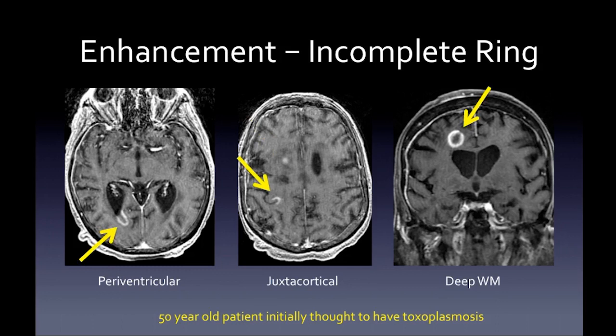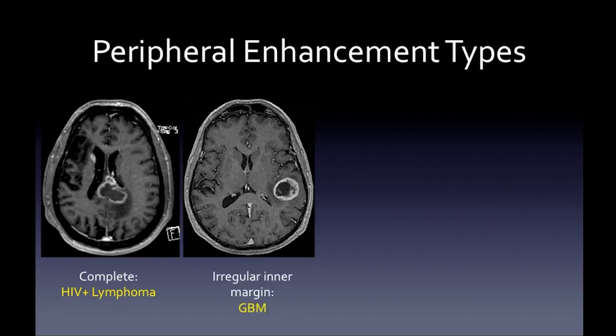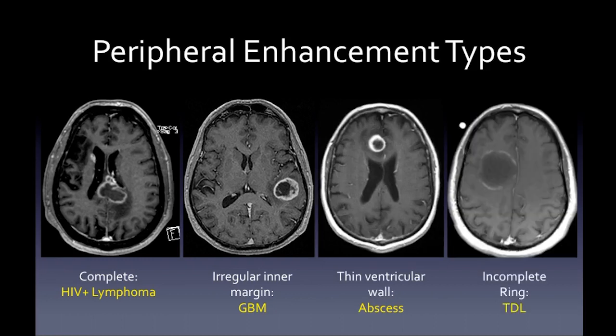For peripheral enhancement types: complete ring enhancement suggests a non-demyelinating lesion, such as CNS lymphoma in an immunocompromised patient or glioblastoma with its thick irregular inner rind. An abscess shows a thinner wall on the ventricular side. The incomplete ring is classic for a tumefactive demyelinating lesion.